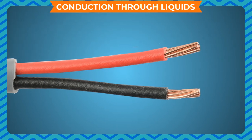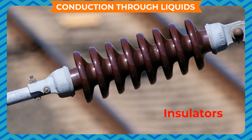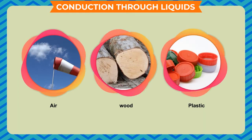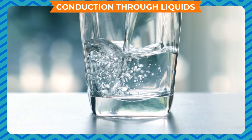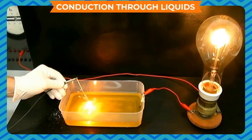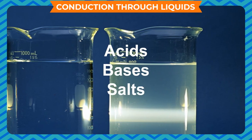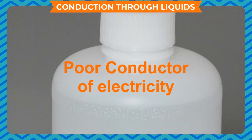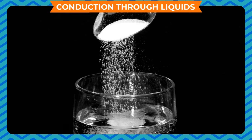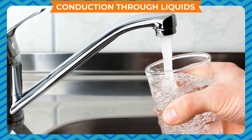There are some substances which allow electricity to pass through them while others do not. Substances which allow electricity to pass through them are called conductors, while those which do not allow electric current to pass are called insulators. All metals are generally good conductors of electricity. Substances like air, wood, and plastic are examples of insulators. Some liquids are good conductors of electricity while some are poor conductors. Most liquids that conduct electricity are solutions of acids, bases, and salts. Although distilled water is a poor conductor as it does not have free ions, when salt is dissolved in it, it becomes a good conductor.